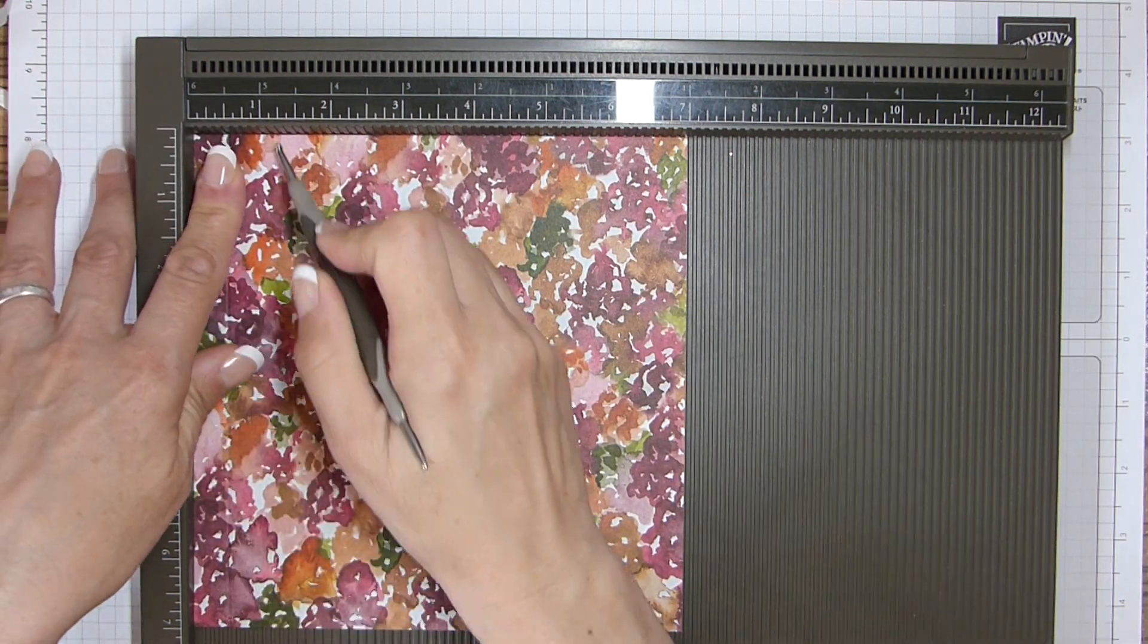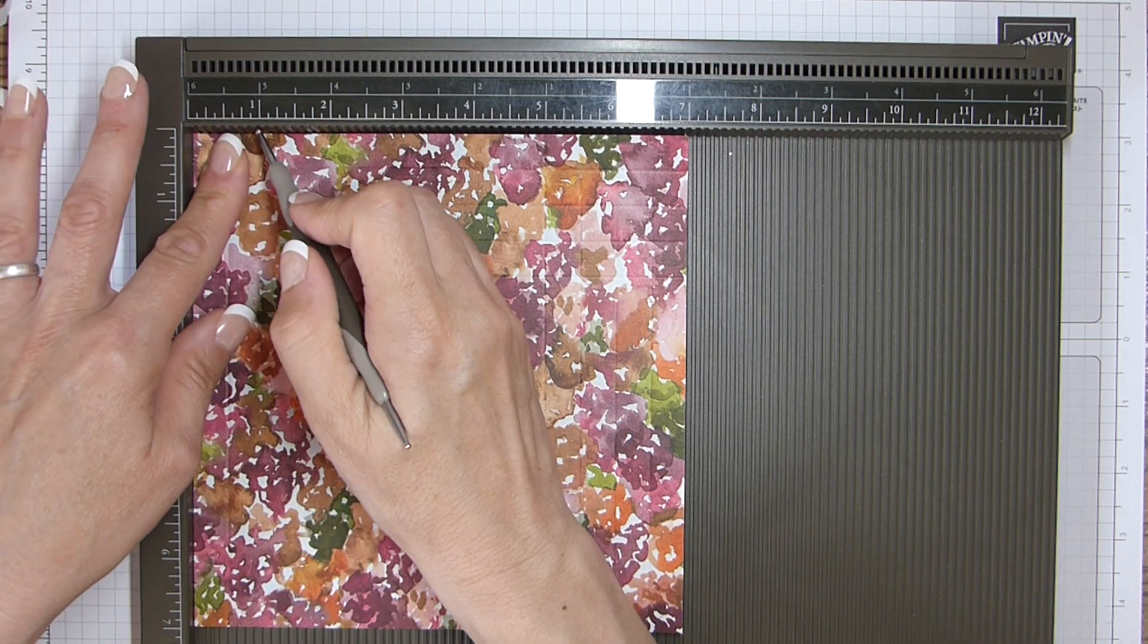Right, so DSP that is 7 by 7 inches or 19 and a half by 19 and a half centimetres. We're going to score all our sides at half an inch, one inch, one and a half and two. So that will be one and a half, three, four and a half and six centimetres. And you're going to do that on all four sides. So same again for this one. So four score lines on all four sides. It's probably the easier way to remember. Equal distance apart.